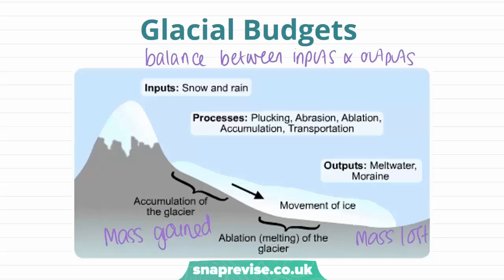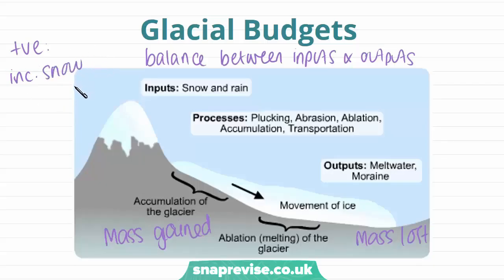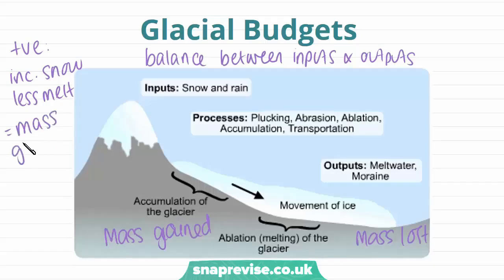To have a positive budget, this happens during glacial periods where we have increased amounts of snow, also known more generally as precipitation, and less melt. So overall the mass of the glacier increases — that is a positive budget.